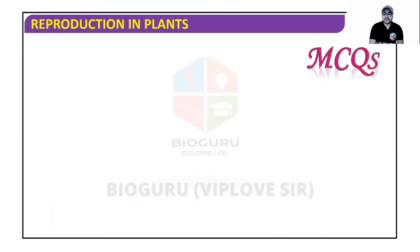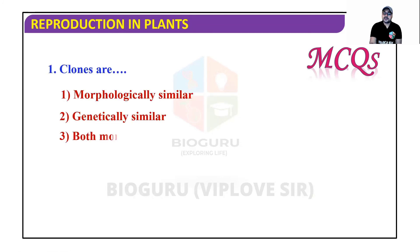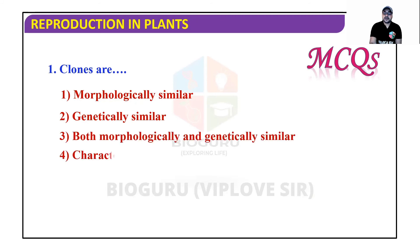Now let's discuss some MCQs. Question: Clones are — morphologically similar, genetically similar, both morphologically and genetically similar, or characteristically similar? The correct answer is: both morphologically and genetically similar.